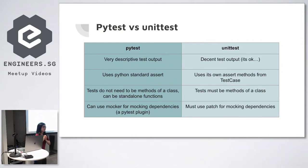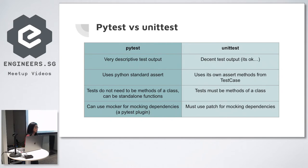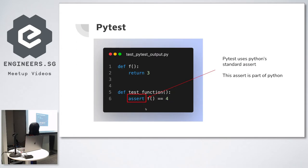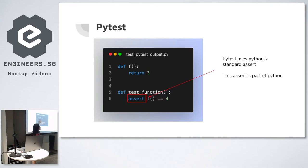PyTest is more descriptive in terms of output, uses Python's standard assert keyword, and tests don't need to always be in a class. For PyTest, you can use mocker for mocking dependencies. It uses the assert keyword directly from Python — you just assert that this function is returning 4. If the function returns 3, the test will fail, and PyTest gives you very colorful output showing clearly that 3 and 4 are not the same.